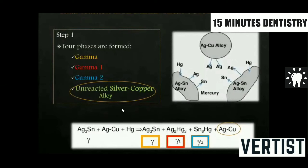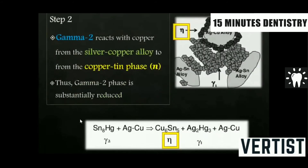Then came the admixed alloy. In the admixed alloy, there were two parts lathe-cut alloy and one part atomized high copper alloy particles. The initial reaction remains the same — you do get gamma, gamma-1, and gamma-2 — but the silver-copper particles remain in the reaction. These unreacted silver-copper particles then react with the gamma-2 phase, because tin has more affinity towards copper than towards mercury, forming a copper-tin phase. Thus the gamma-2 phase is substantially reduced and you get a stronger alloy.